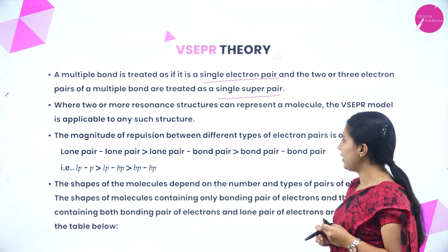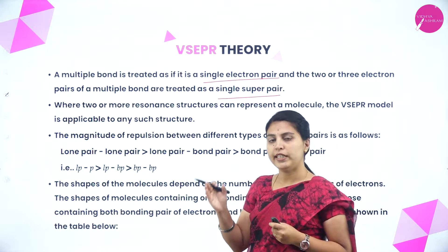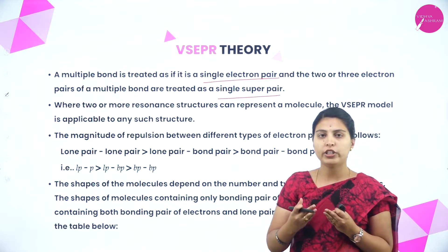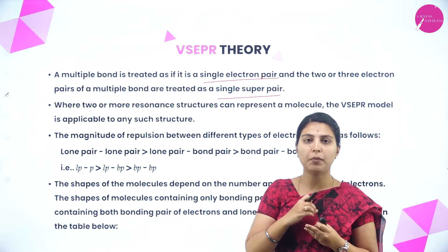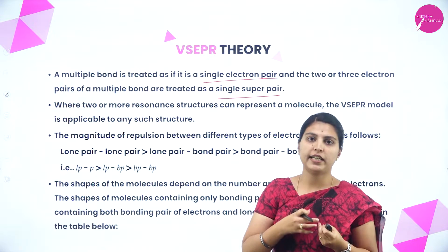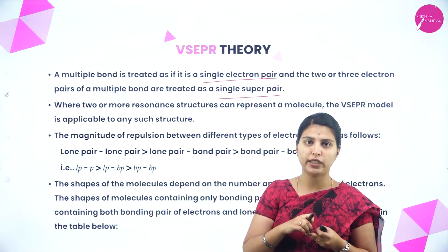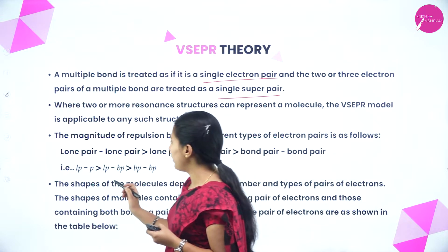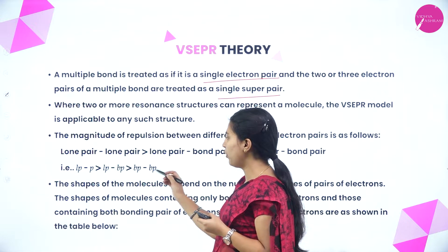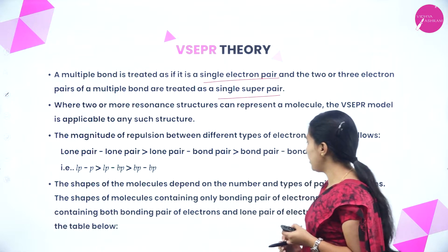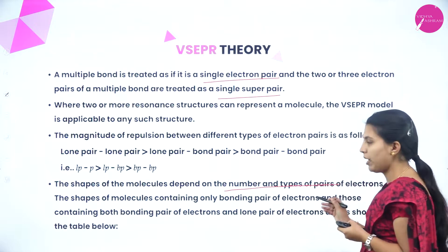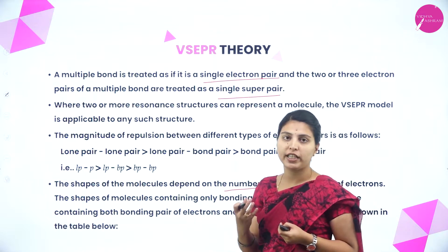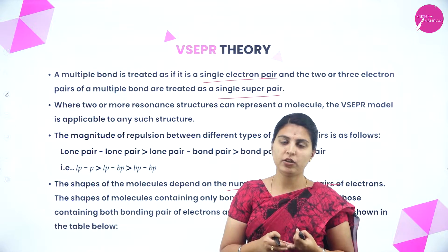The magnitude of repulsion between different types of electron pairs follows this order: lone pair–lone pair repulsion is greatest, lone pair–bond pair repulsion is medium, and bond pair–bond pair repulsion is least. A lone pair is not involved in bonding so it moves freely in space and repels strongly. Bond pair electrons are confined in bonding space and repel less. The shape of a molecule depends on the number and types of electron pairs.